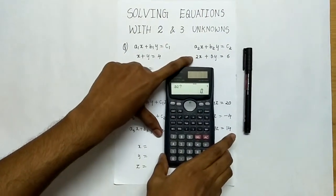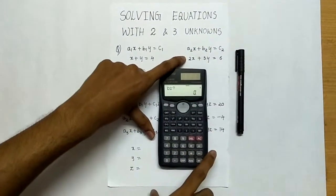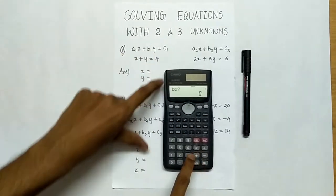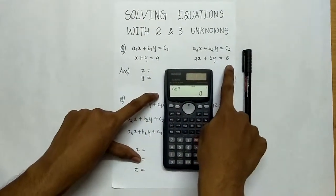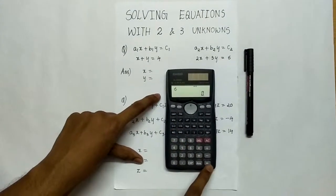Now a2 is the coefficient of x in the second equation where it is 2, press 2 equal to. b2 is the coefficient of y in the second equation that is 3, press 3 equal to. The constant term here is 6, press 6, on pressing 6, press equal to.